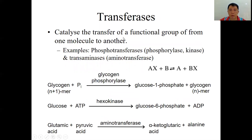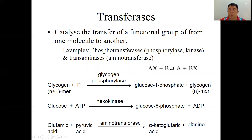Transferases catalyze the transfer of a functional group from one molecule to another. For example, phosphorylase transfers a phosphate group. Hexokinase involves the transfer of a phosphate group from ATP to glucose to form glucose-6-phosphate. Transaminase, also called aminotransferase, involves the transfer of an amino group from an amino acid to an organic acid to form alpha-ketoglutaric acid and a new amino acid.